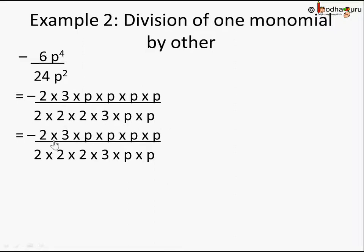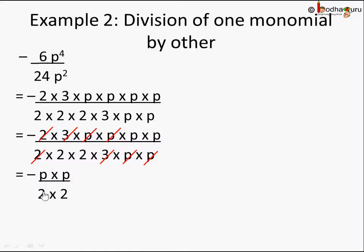Now cancel common factors: the 2 from the numerator cancels with one 2 from the denominator, the 3 cancels with the 3, and two p's from the numerator cancel with the two p's from the denominator. Don't forget the minus sign. What's left is minus p² in the numerator and 2 × 2 in the denominator, giving a final answer of minus p² over 4. This is essentially the same process as dividing whole numbers — break into factors and cancel.